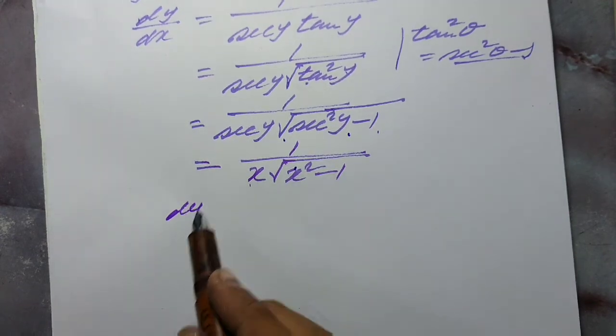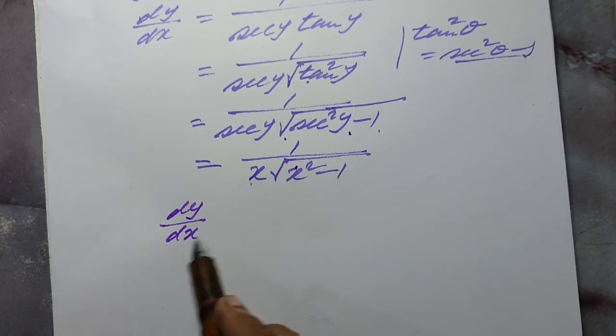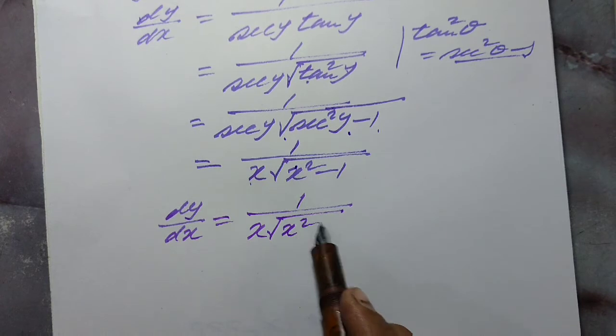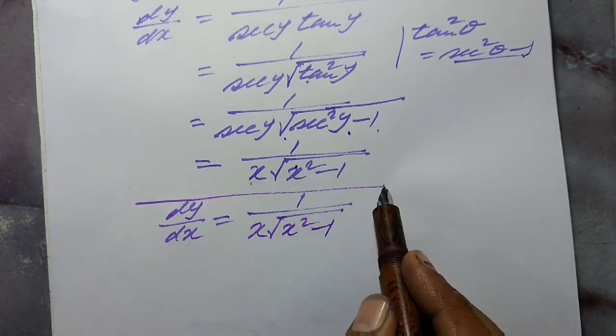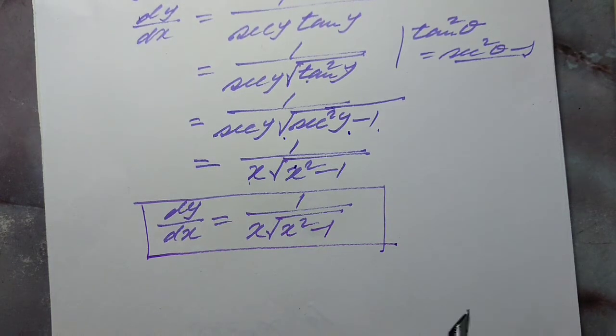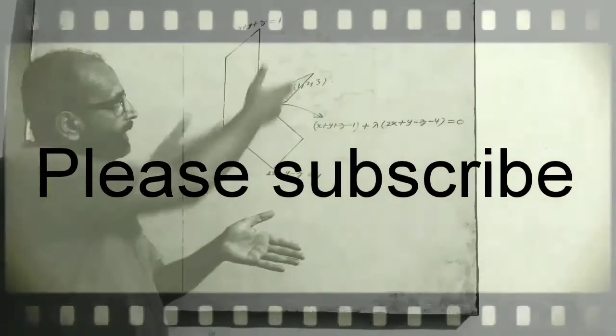So this way we find that the derivative of sec inverse x is 1 upon x under root (x squared minus 1). This is the proof of the derivative of sec inverse x with the help of first principle. The differential coefficient of sec inverse x is 1 upon x under root (x squared minus 1). Please try it yourself. Thank you very much for watching this video.